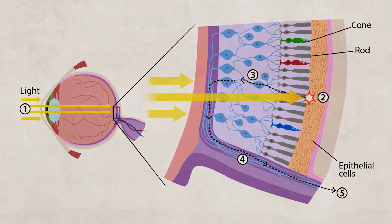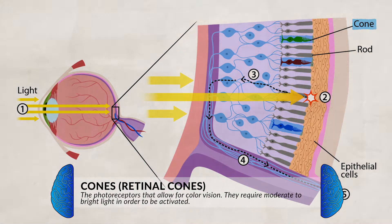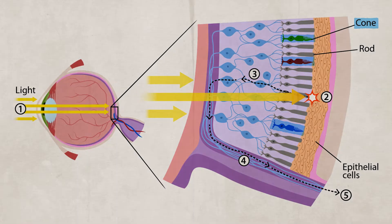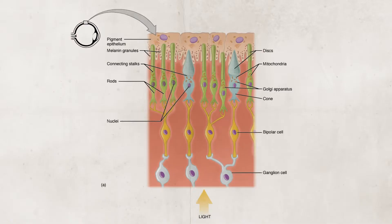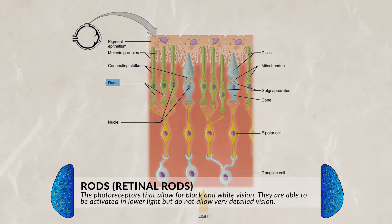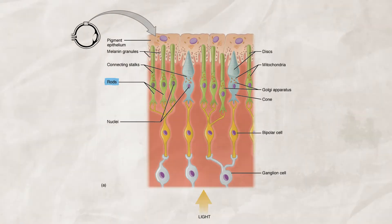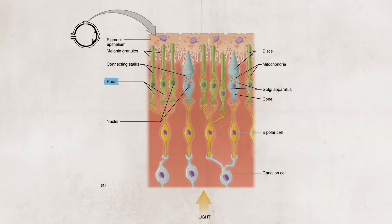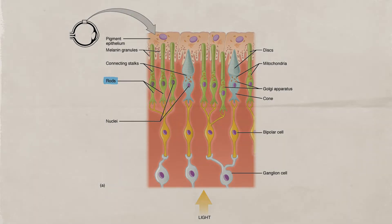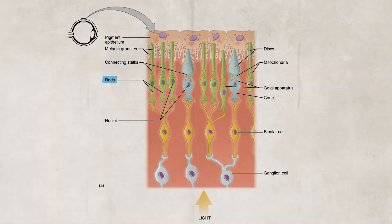Rods and cones are types of photoreceptors found in the retina. Cones help you see fine detail, allow for clear vision, and allow you to see color — they need moderate to bright light for activation and have three different photopigments. On the outer edge of the retina, the peripheral, are rods. These are visual receptors that allow you to see in dim light. Rods all contain the same photopigment, resulting in an inability to provide color information. This is why in a dim to dark room you may see shapes, but everything will appear in black and white. Once more light is present, your cones activate and you can see colors again.